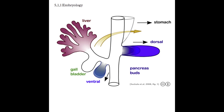The dorsal bud is going to give rise to the neck, body, and tail of the pancreas, while the ventral bud gives rise to the head and uncinate process. Eventually, those buds should fuse together, creating the pancreas and the main pancreatic duct.